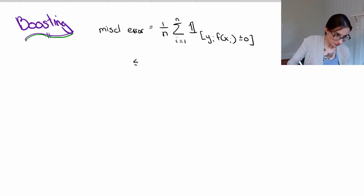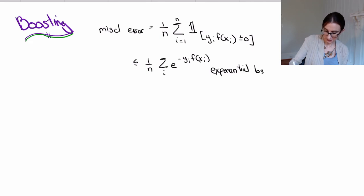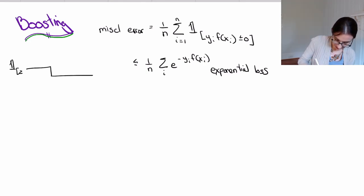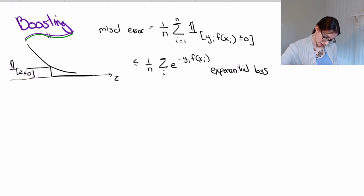And then obviously we're going to upper bound by the exponential loss, so it's sum over i, e to the negative margin, yi f of xi. And the picture, as you might recall, looks something like this. So it's this function that's one if you have z being less than or equal to zero, and then the exponential loss looks like e to the negative z. So that's the upper bound we're working with.